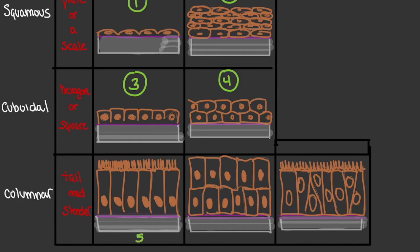For number five, it's possible to have a single layer of cells that are tall and slender in appearance, which we call a simple columnar epithelium. And for number six, we could say that we have a stratified columnar epithelium — multiple layers of cells that are tall and slender-like in appearance.